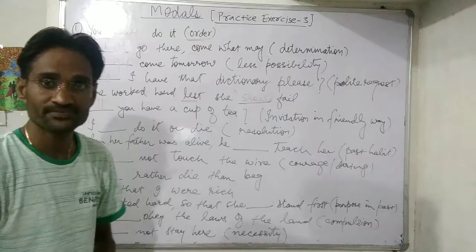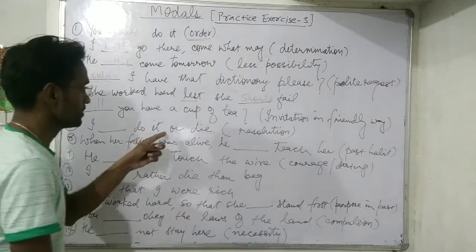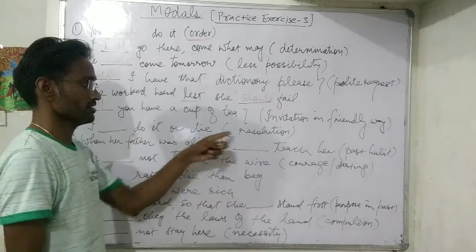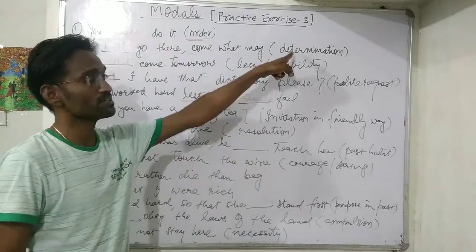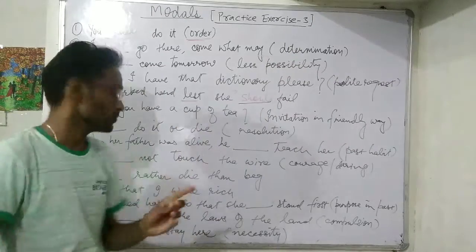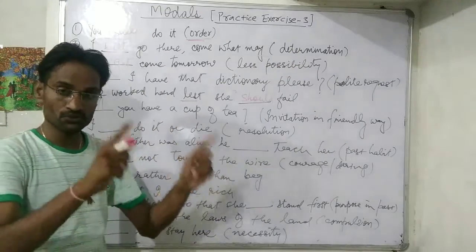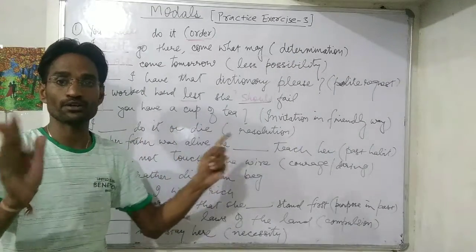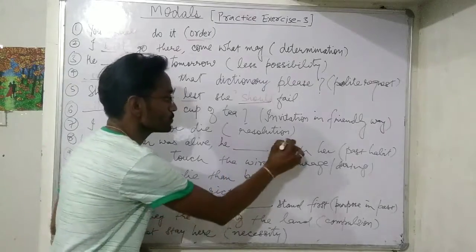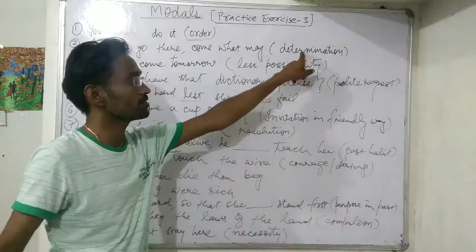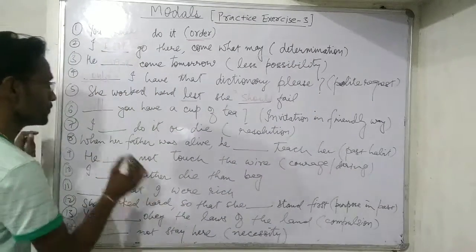Next: 'I do it or die' — resolution. Resolution means determination — that you have decided what you are to do. 'I will do it or die' — it means I will do it no matter what. So for resolution or determination, we use 'will.'